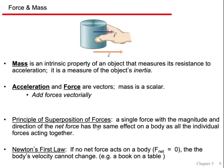Mass is an intrinsic property of an object — it doesn't change where you're at. If this is a one-kilogram mass, its mass doesn't change no matter where you move it. In the middle of space it would still have a mass of one kilogram; on the surface of the Moon, its mass would still be one kilogram. The things that do change are the force of gravity on it depending on location. On the Earth's surface the force of gravity would be 9.8 Newtons, in space no force of gravity, and on the Moon's surface about 1.6 Newtons because the acceleration of gravity there is about 1.6 m/s².